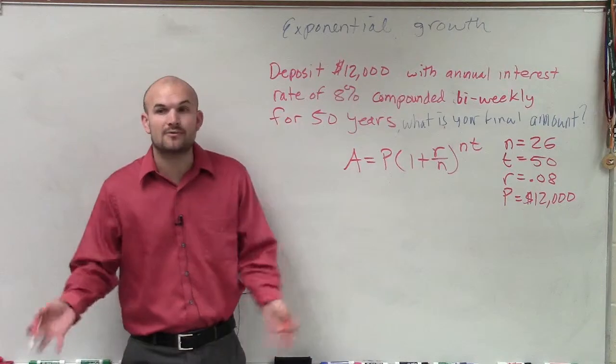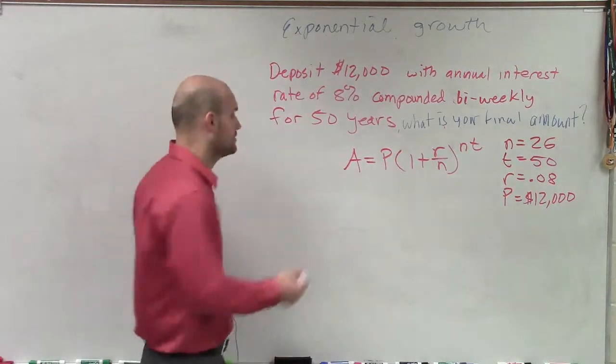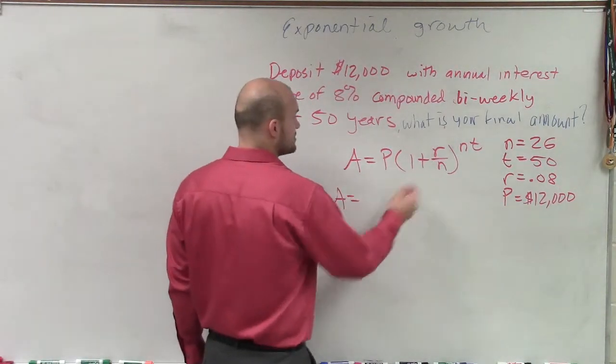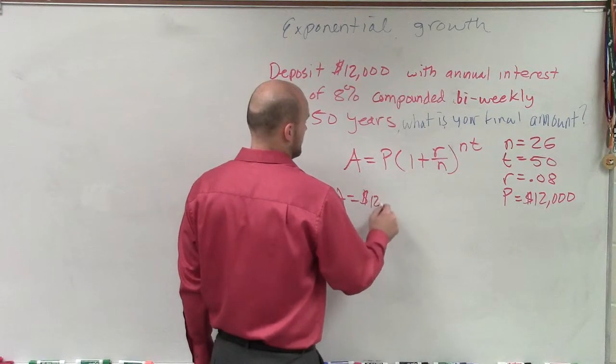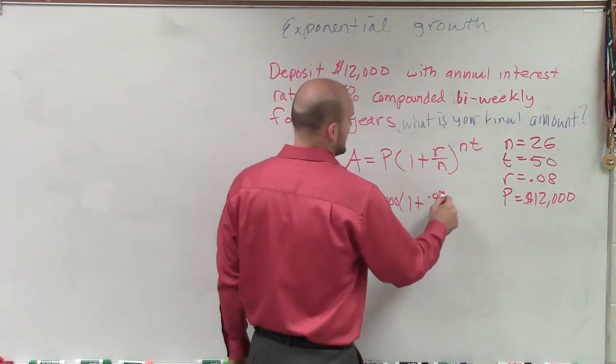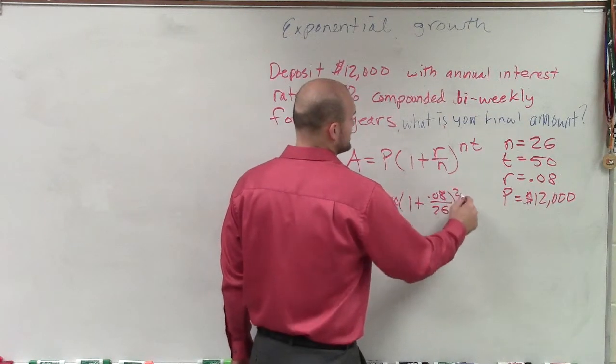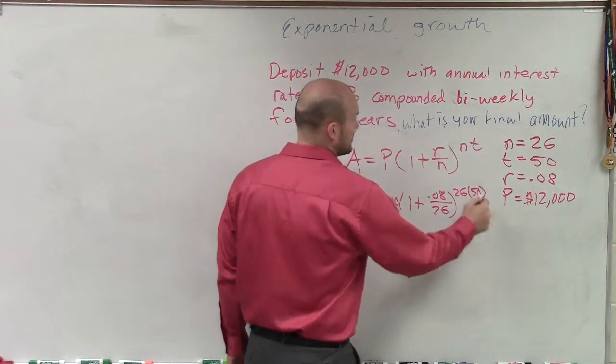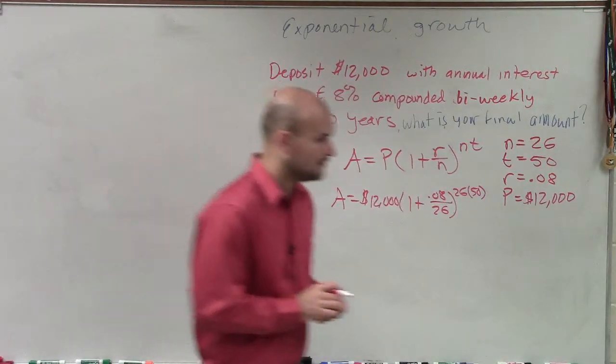So now you just have all those values. Now we're just going to plug them into the equation. So we have A equals principal times 1 plus 0.08 divided by 26 raised to the 26 times 50.